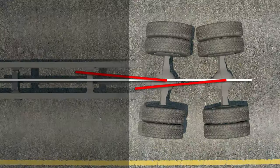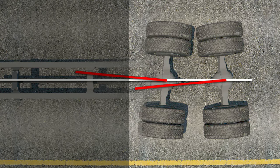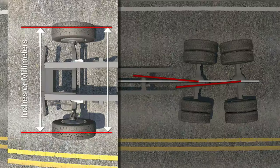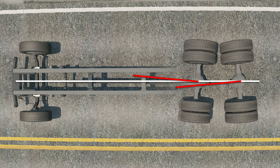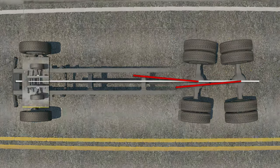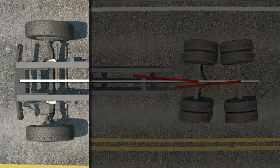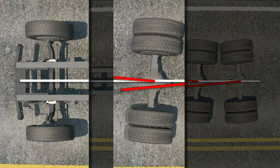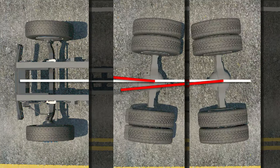The alignment condition of the rear wheels is even more important than the alignment condition of the front wheels. This is because misalignment at the rear will affect tread life of every tire on the vehicle.